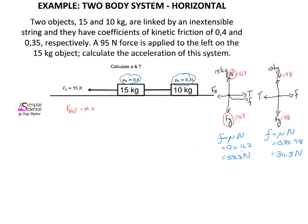For the 15 kilogram object, F_net = ma, where the net force is the applied force to the left minus tension and friction acting to the right: 95 − T − 58.8 = 15a. Tension is unknown and friction is 58.8 newtons. This simplifies to T = 36.2 − 15a.